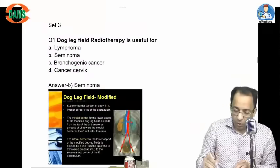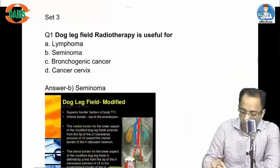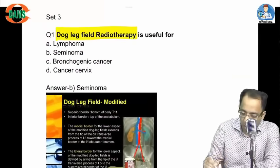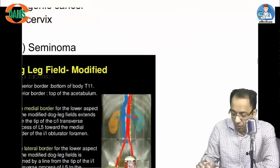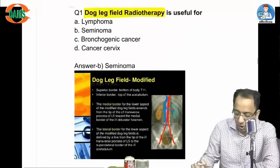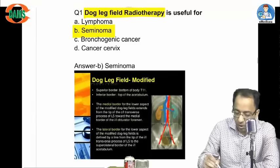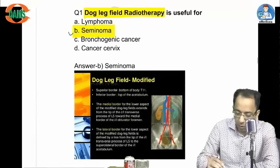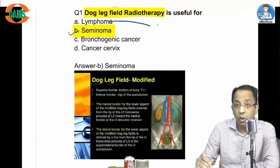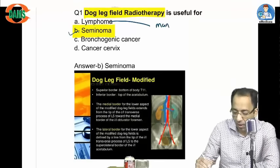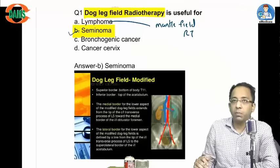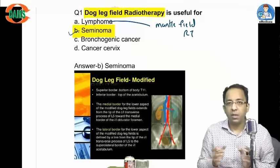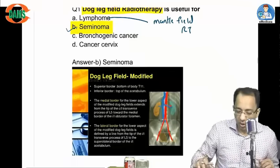Let's discuss: dog leg field radiotherapy is used for testicular tumors or seminoma. But for lymphoma, some of you got it wrong — the answer is mantle field radiotherapy. So if they say mantle field radiotherapy, think of lymphomas. In this question, it was dog leg field radiotherapy.